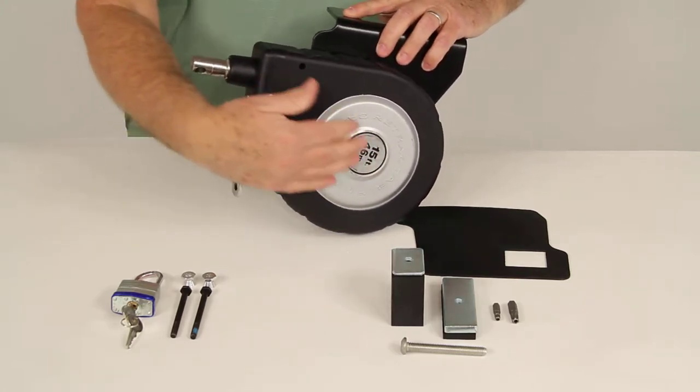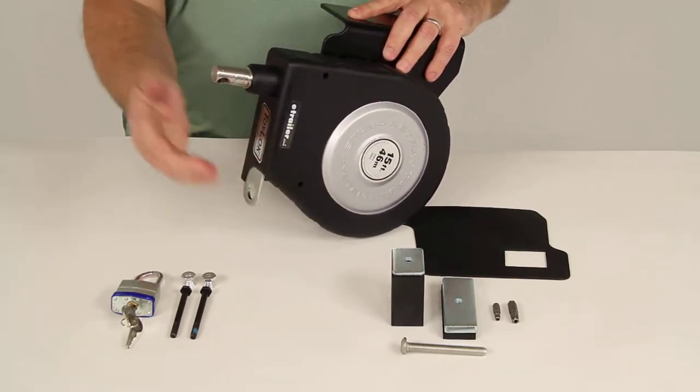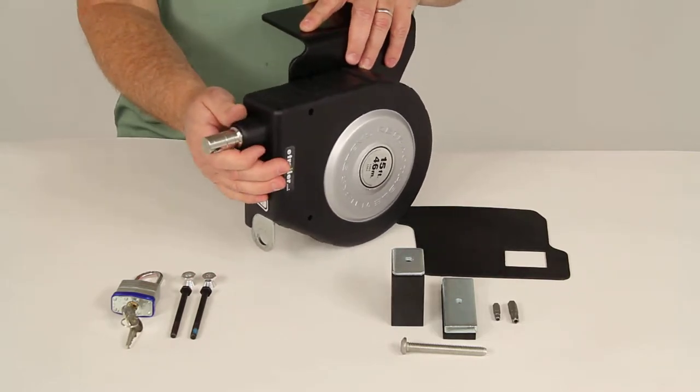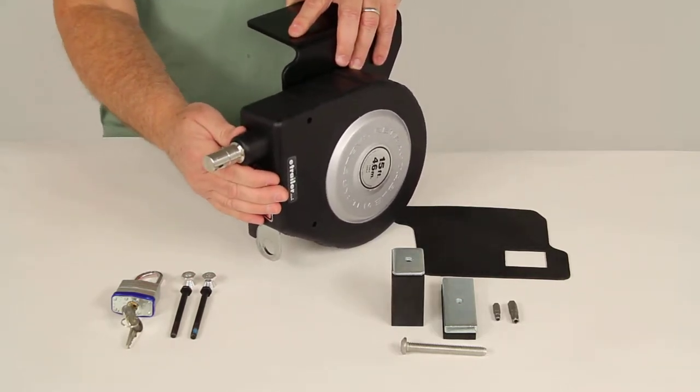Inside here it has a nice smooth acting clutch for easy cable operation. It'll let you pull out the length of cable that you need and it'll prevent cable snap back while retracting.